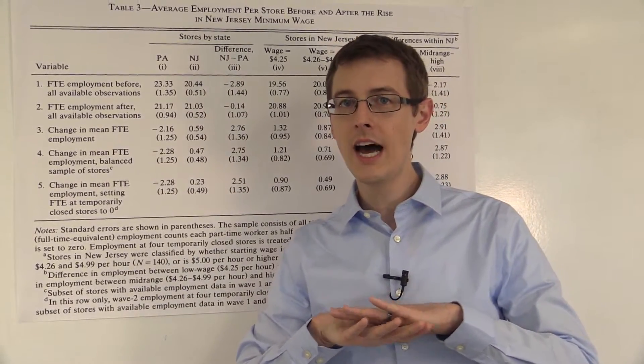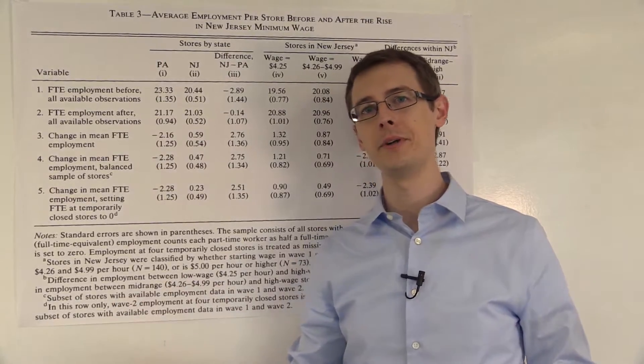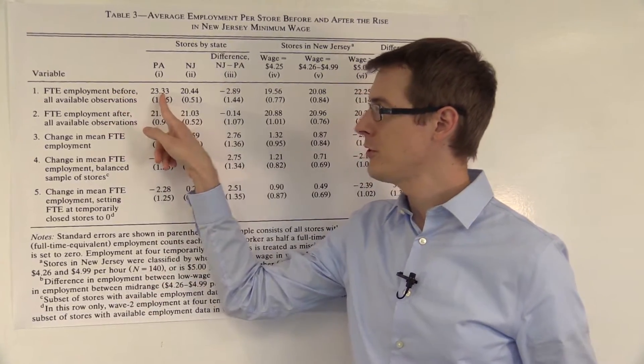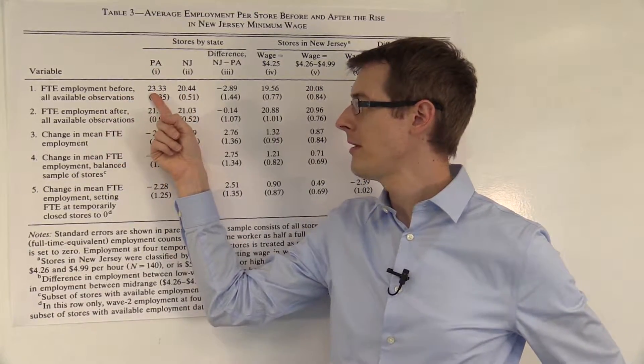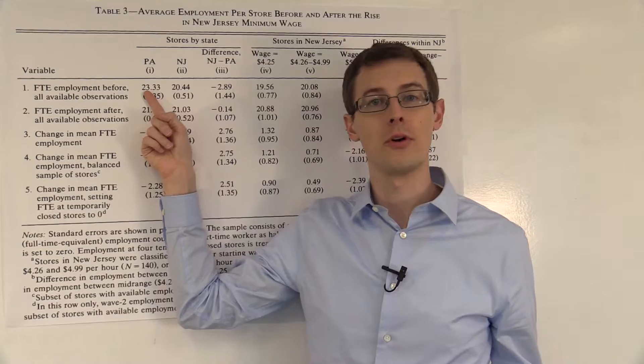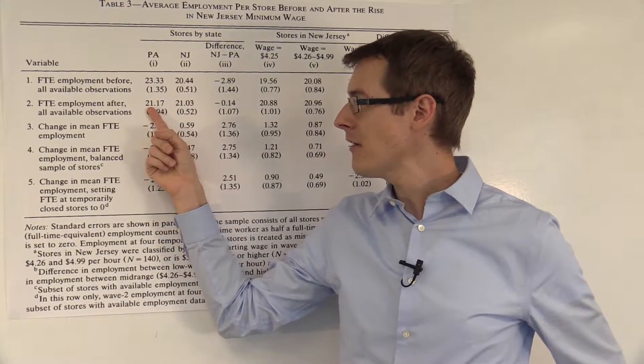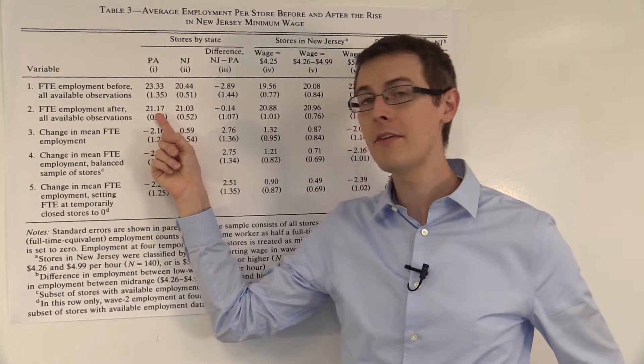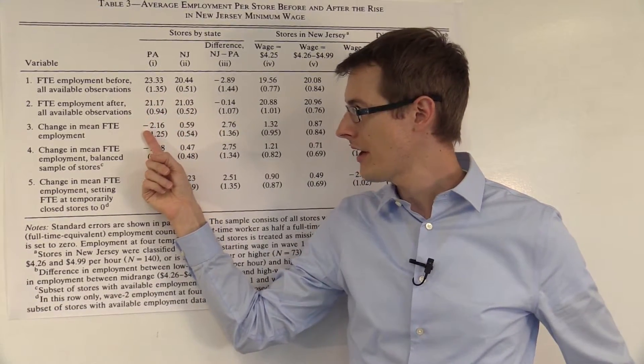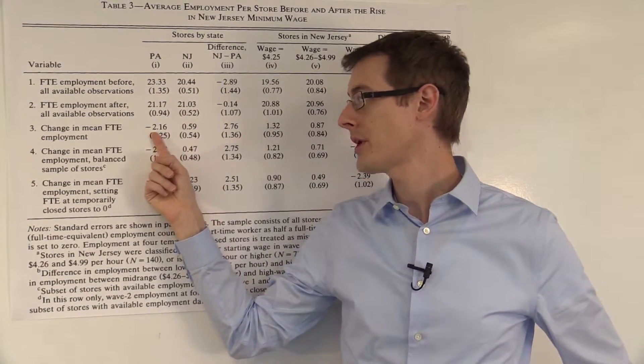So before the New Jersey law was passed, in Pennsylvania, the average full-time equivalent employment was 23 people per store. And then after the law was passed, it went down to 21.17 people per store for a difference of 2.16 people.